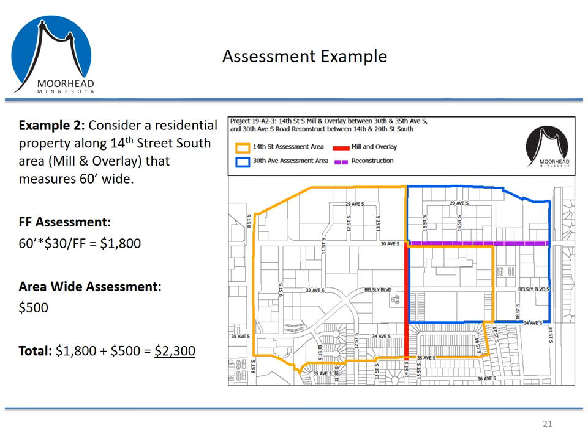For example two, let's consider a residential property on 14th Street South, which is the mill and overlay area, and that the property measures 60 feet wide. The front footage assessment would be 60 feet times $30 a front foot — the rate for a mill and overlay — for a front footage assessment of $1,800. This property would also receive an area-wide assessment of $500, so $1,800 plus $500 gives a total assessment of $2,300.